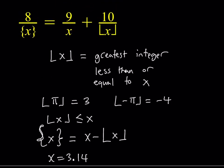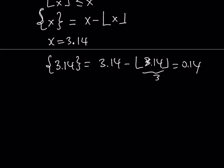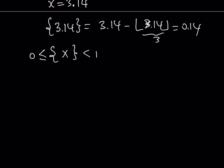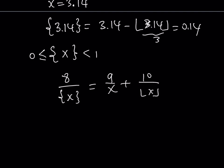Now let's look at our equation. One significant thing about the fractional part of x is that if x is an integer it equals 0, so we're looking at a value between 0 (inclusive) and 1. Since the fractional part can't be 0 here and is less than 1, when you divide 8 by it you get something greater than 8. So 8 divided by the fractional part of x is greater than 8.